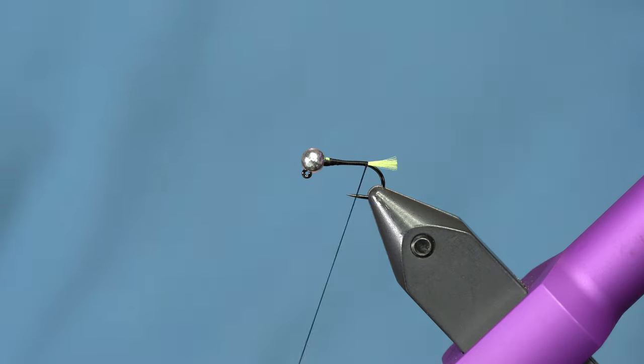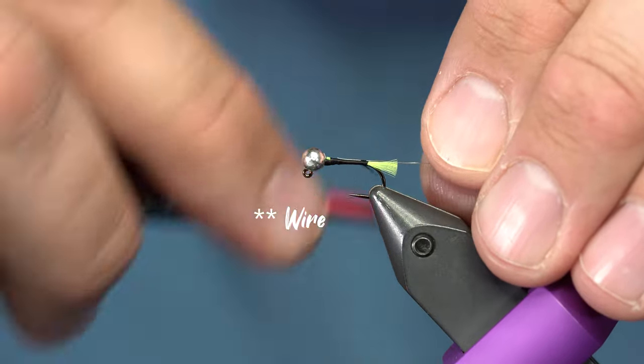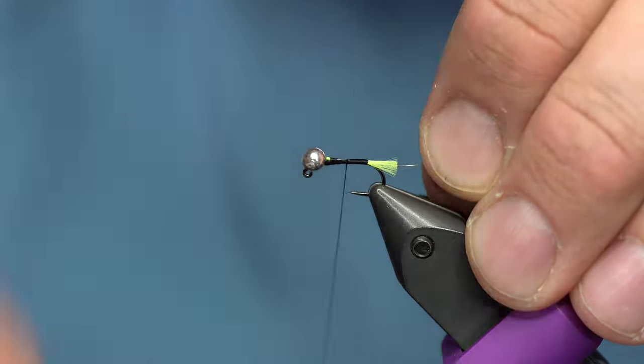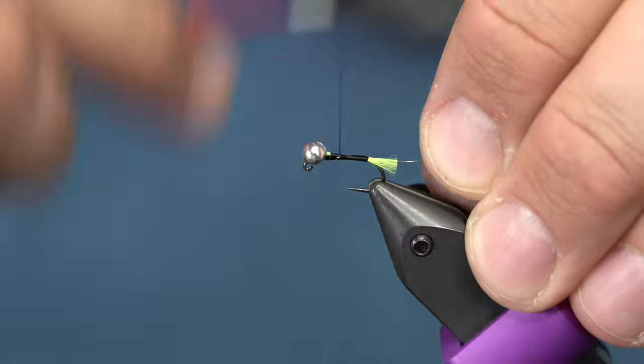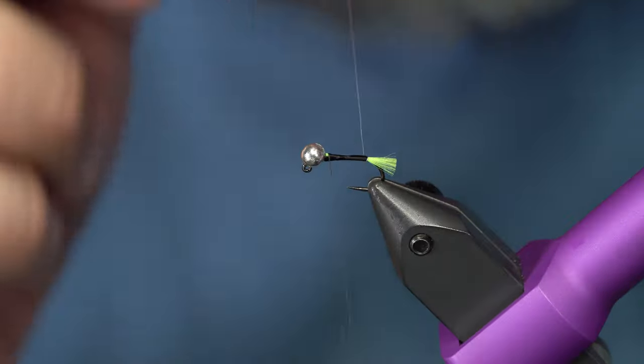The body on this one's super simple. It's just silver thread. This is 0.1 millimeter from Semperfly and we're going to just tie that up the body. You don't even need a lot of tape. We're going to keep it thin so it cuts through the water really well.